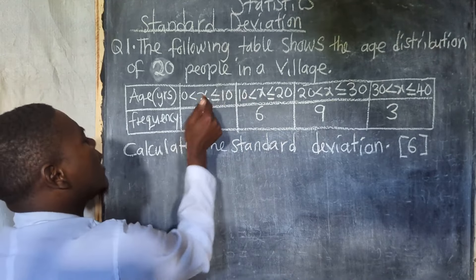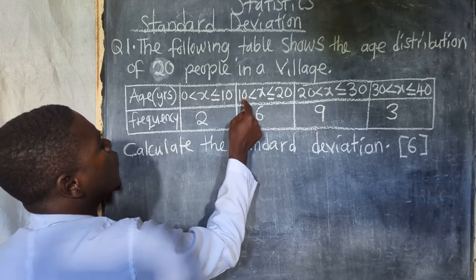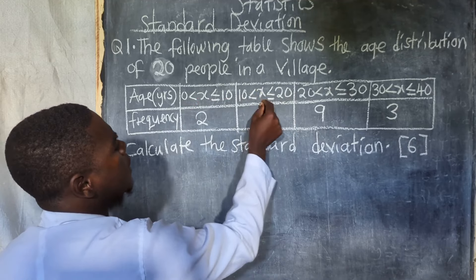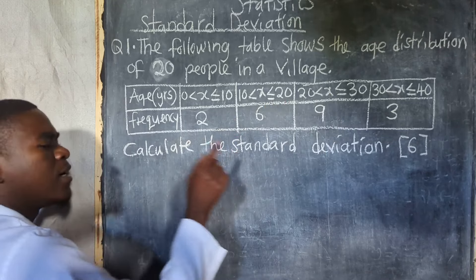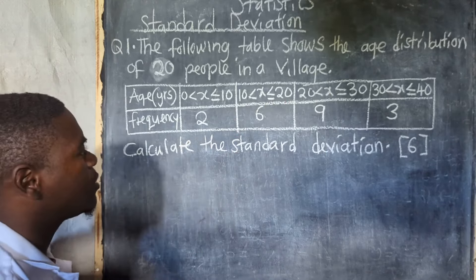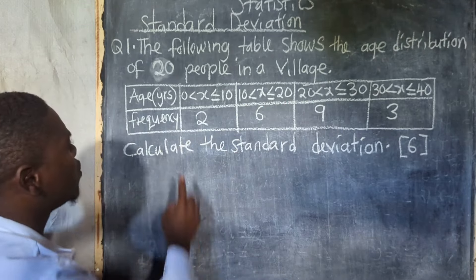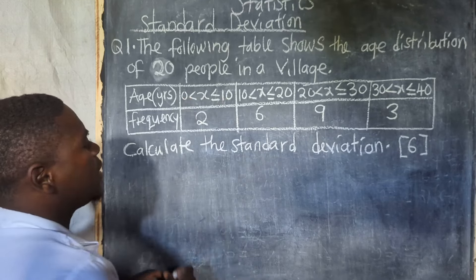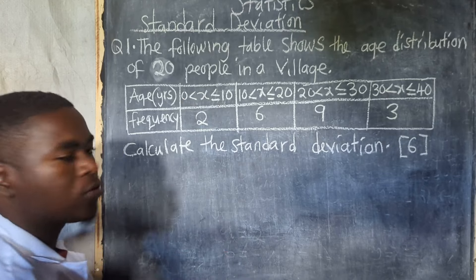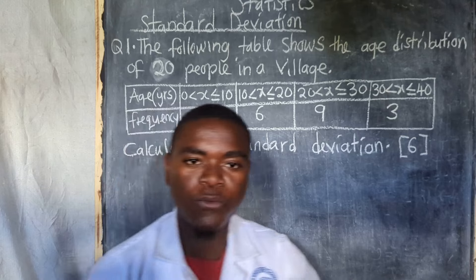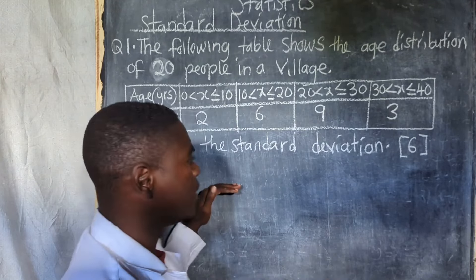As long as the data is exactly like this — from 0 to 10 that is X, from 10 to 20 that is X, from this to that that is X — meaning that this data is grouped. So once you notice that the data is grouped, what you need to do is find the average. You need to find the average. This is the first thing you need to do.